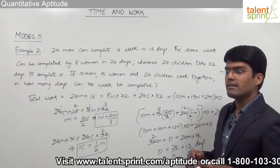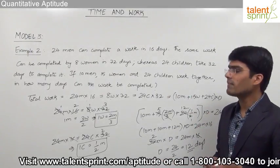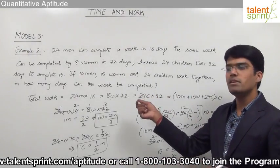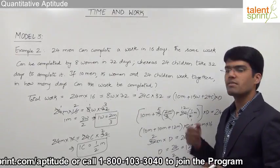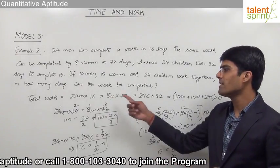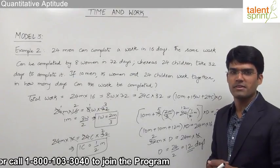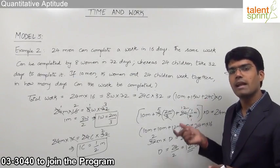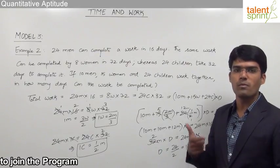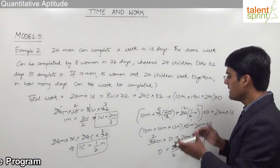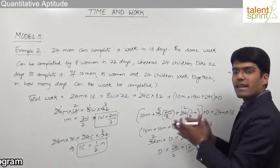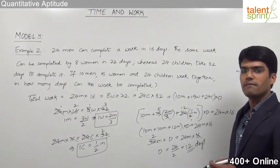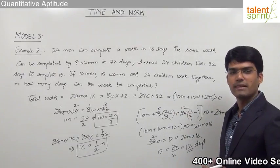The approach: first equate total work in terms of men × days, women × days, and children × days. Then find the relationship between different types of persons. Convert the given group entirely into one type — men, women, or children — then equate with the same type on the other side to find the number of days required.